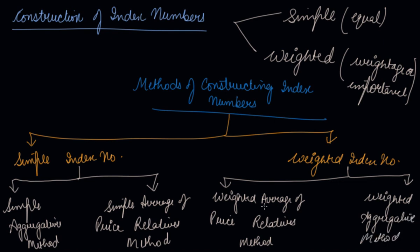In both cases — simple index number and weighted index number — there are two methods which are very similar. The first is the simple aggregator method and weighted aggregator method. The second method is the simple average of price related method and weighted average of price related method. So in one method we use the aggregator approach, and in the second method we use the price related approach, in both cases of the index numbers.